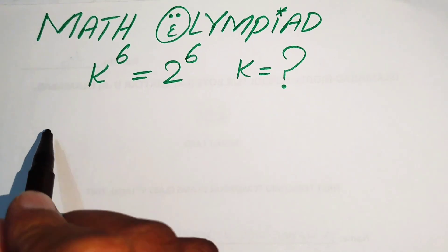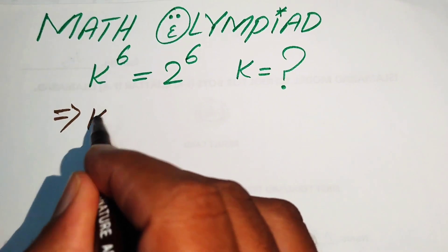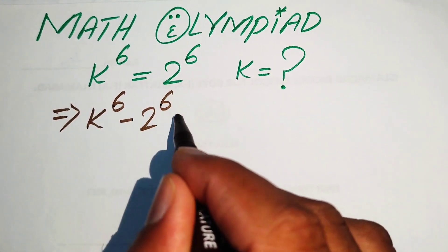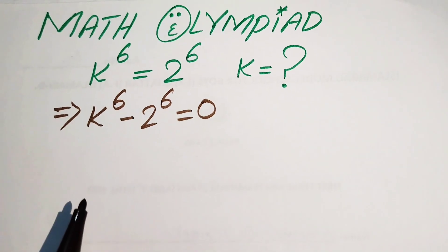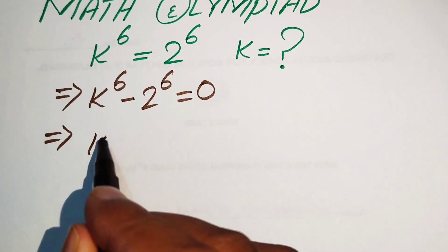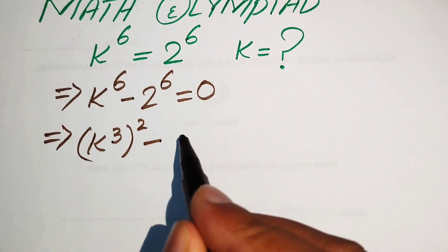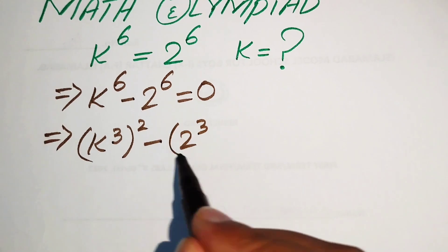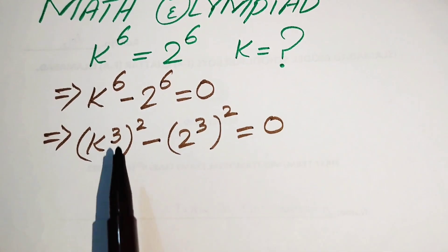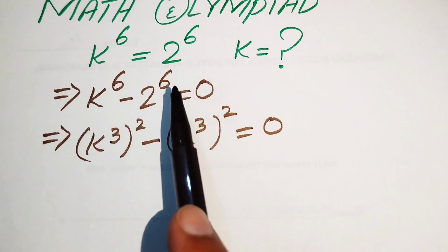The very first step is to move 2 to the power of 6 to the left-hand side, and we write it as k to the power of 6 minus 2 to the power of 6 equals 0. Now we rewrite this as k cubed whole squared minus 2 cubed whole squared equals 0. Multiplying the exponents: 3 times 2 gives 6 in both cases.